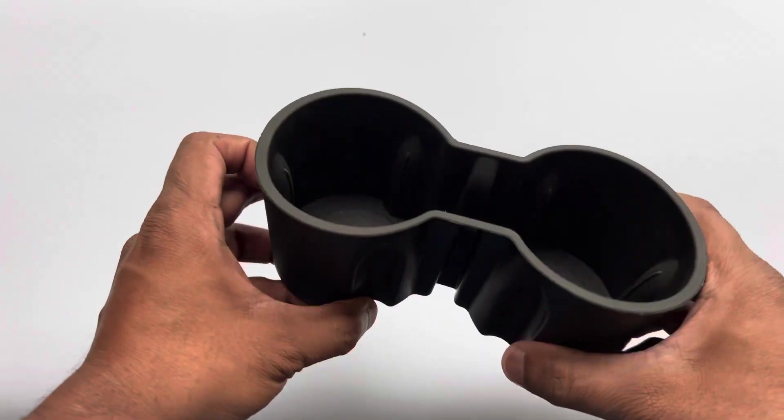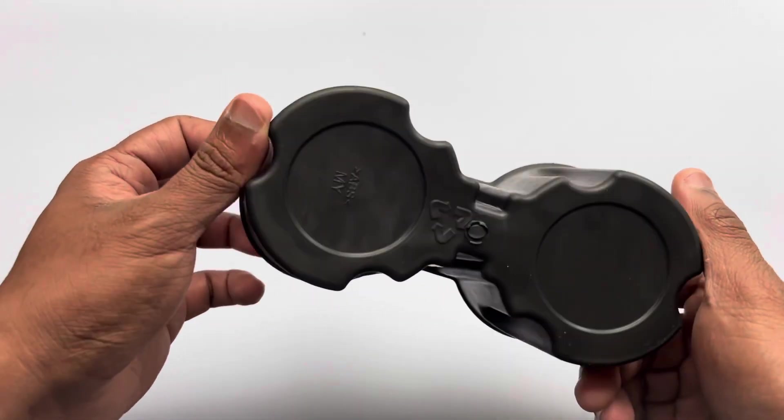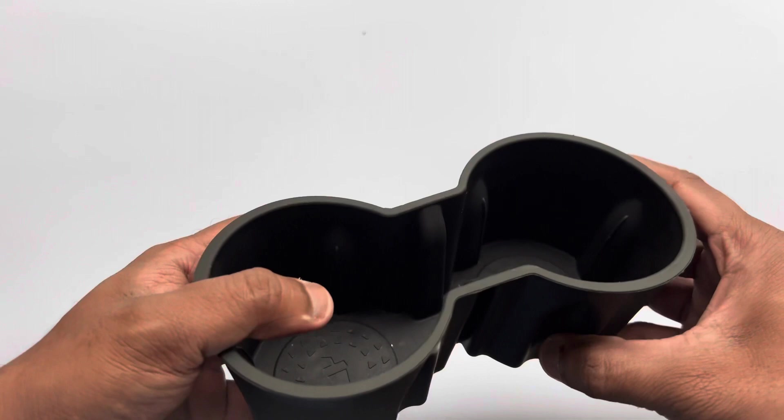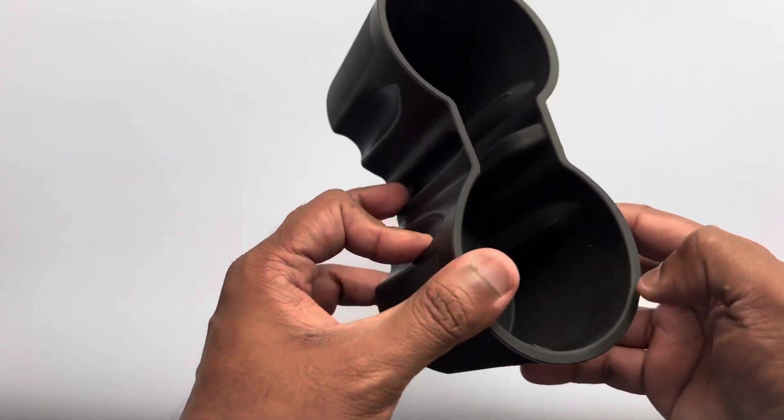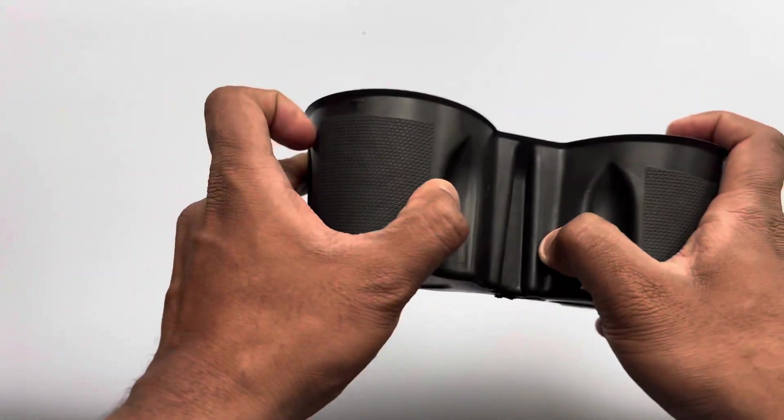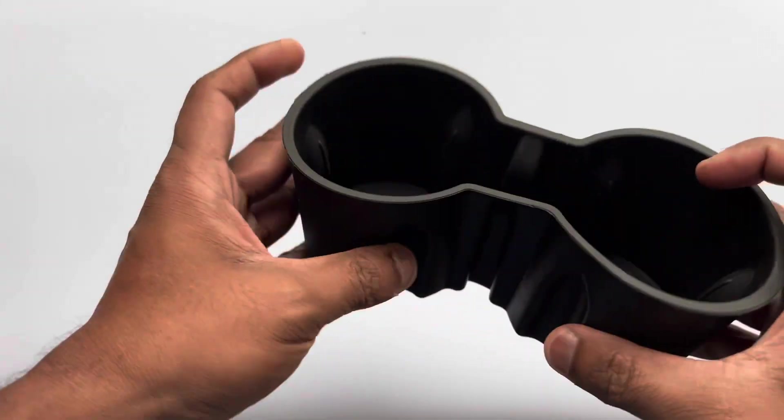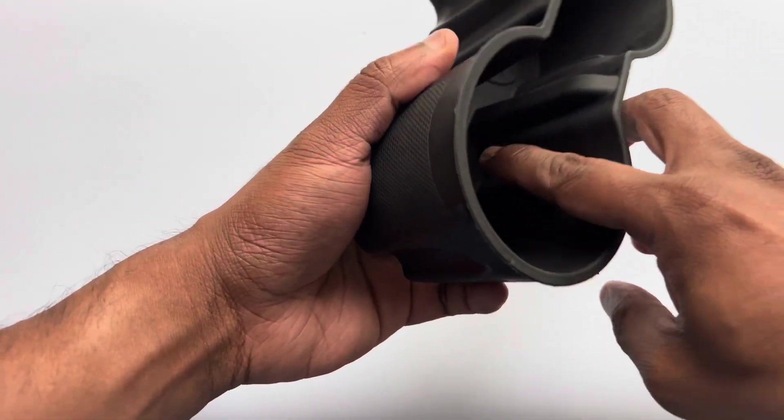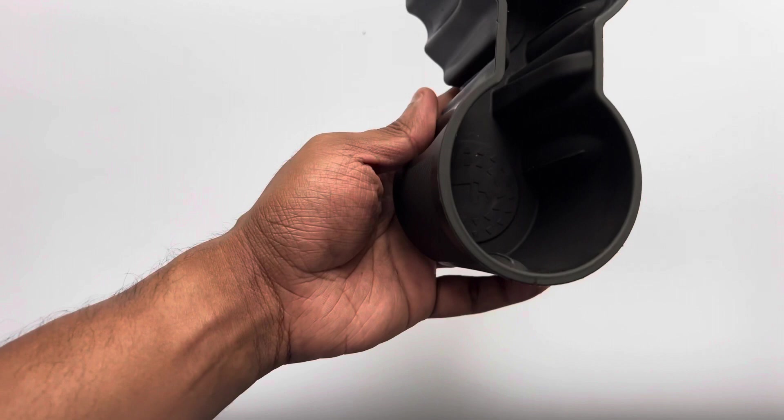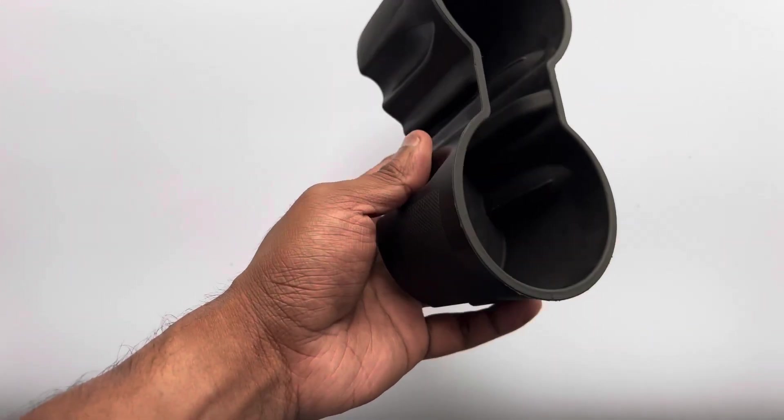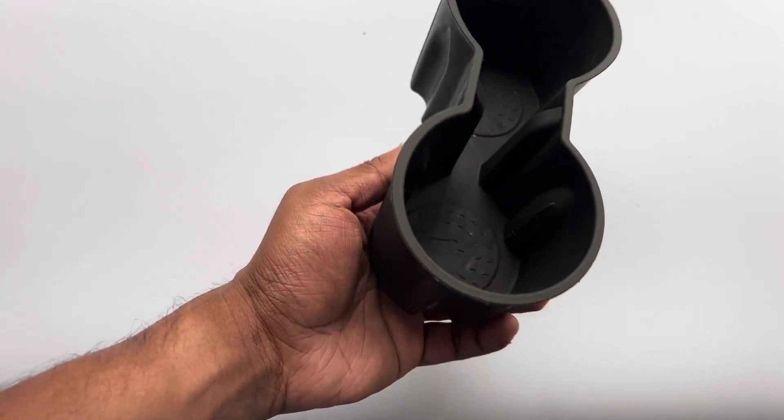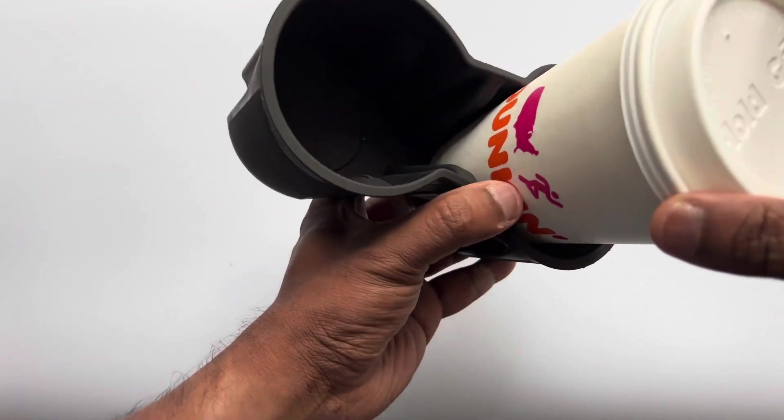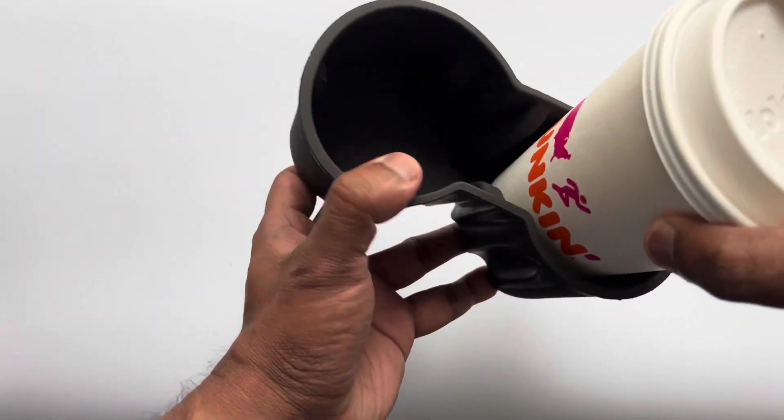Before going into the car I'll just show you the insert. It's pretty much a flexible material - I don't know exactly what it is. It has some sort of portion where it takes the pressure from the cup that's inserted, whether it's a cup or a bottle. So I'll just simply put the Dunkin Donut cup in.